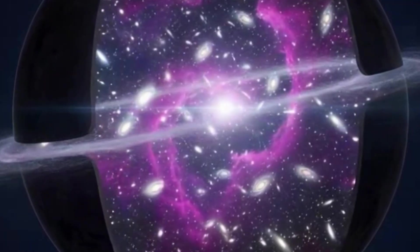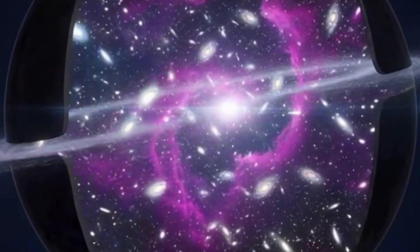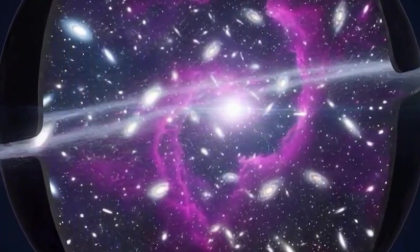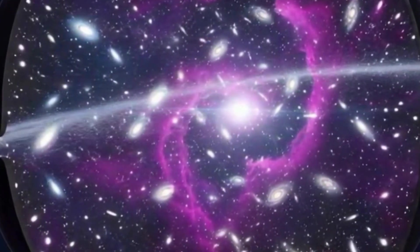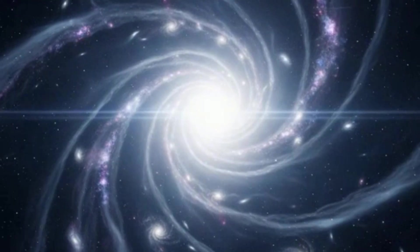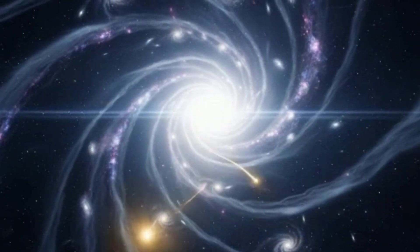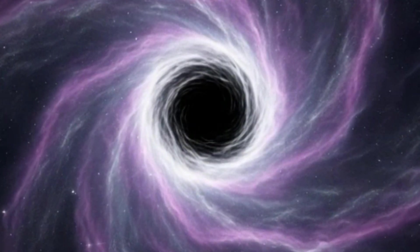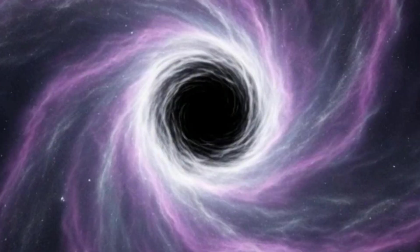To make sense of this, we need to explore the physics of black holes themselves. When matter collapses under gravity to form a black hole, it creates a boundary known as the event horizon — a point of no return beyond which not even light can escape.